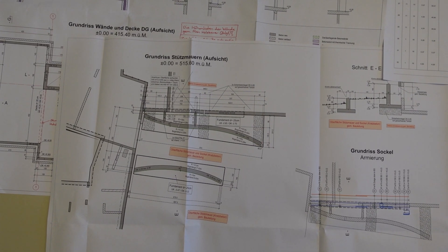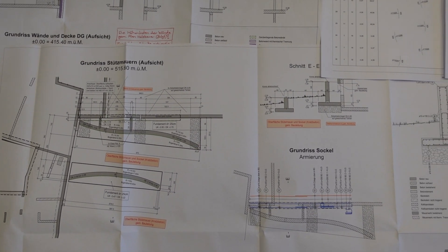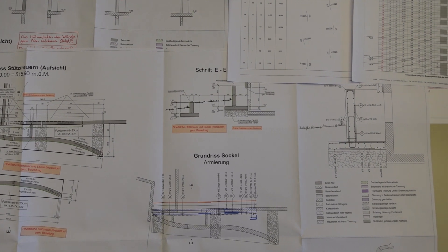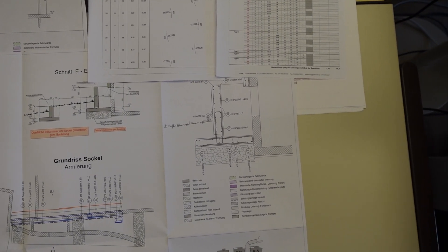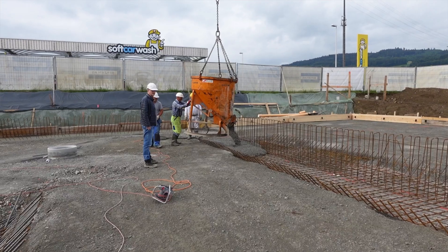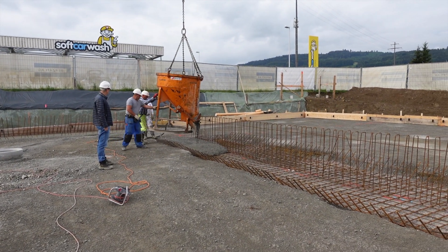We provide the documents for the executing company on site, like the builder. These are the plans for the formwork, for reinforcement and also the belonging order lists. So we do not build the constructions ourselves — we just do the planning, the design, and the supervision on site. For that we work in a team with sanitary, airing, and heating engineers, and last but not least with the architect.